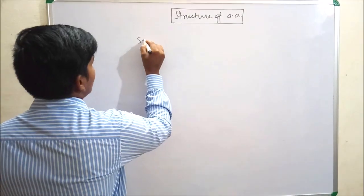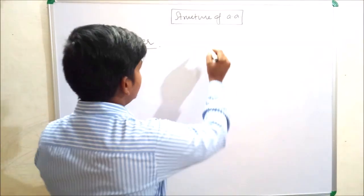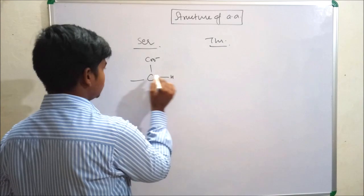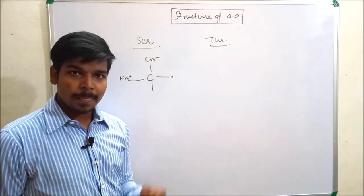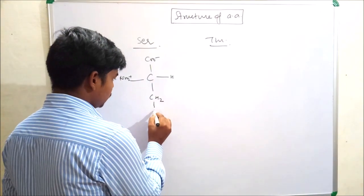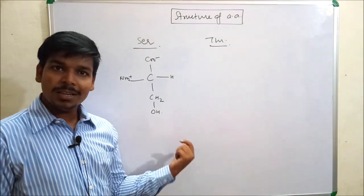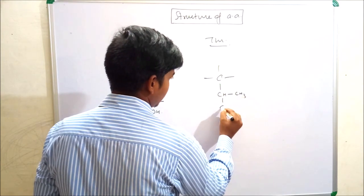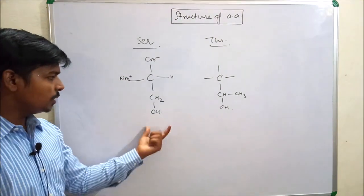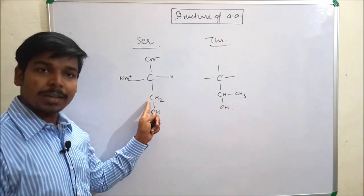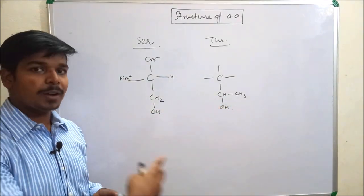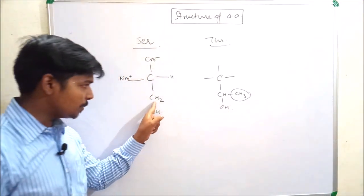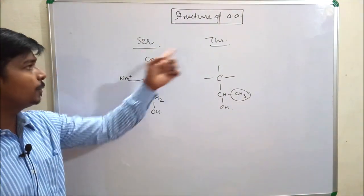What are the hydroxyl-containing amino acids? Serine and threonine. The basic building block is the same. For serine, the R group is CH₂OH. For threonine, just add one extra methyl group to that carbon — CH(OH)CH₃ — just like the relationship between glycine and alanine. Add one methyl group to serine's carbon and you get threonine.